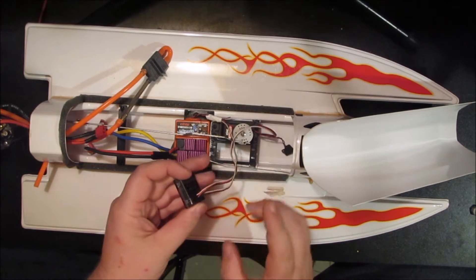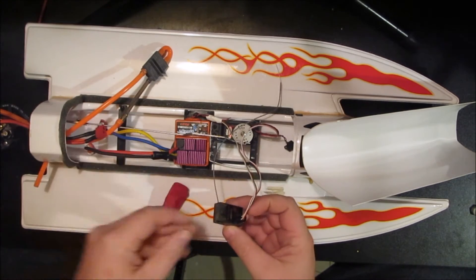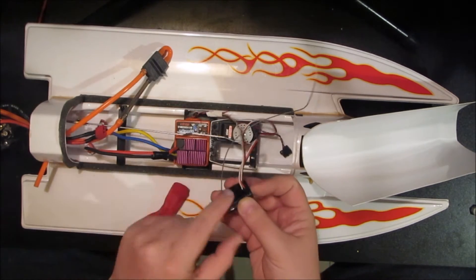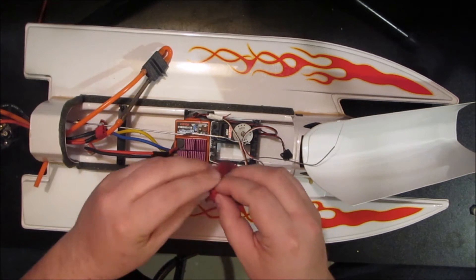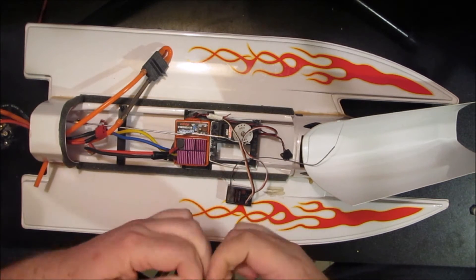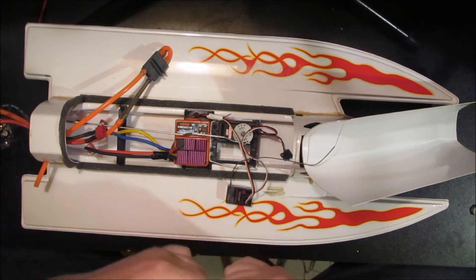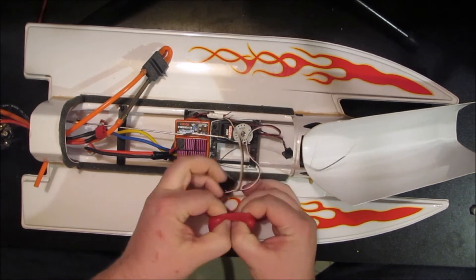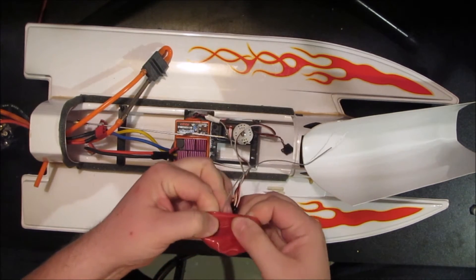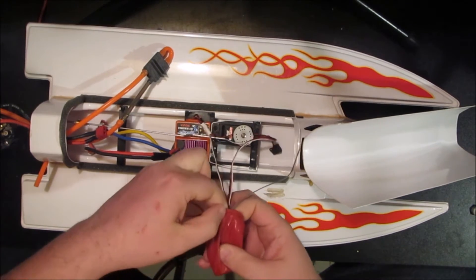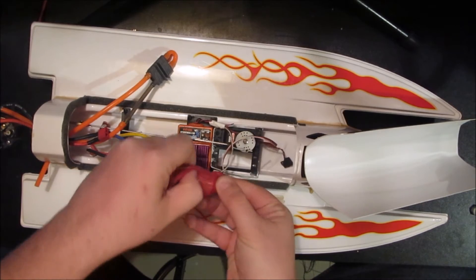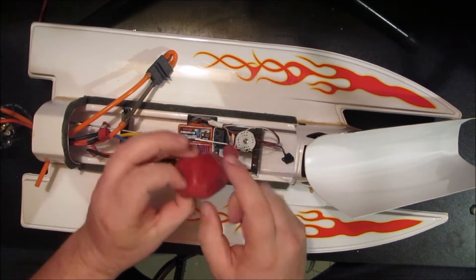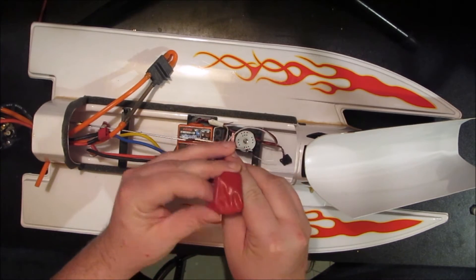The ESC and servos are already plugged in. Here's the antenna wire, and it's all going to just basically come up like this with this being inside the balloon. How we do that is we're just going to take the balloon, stretch it open, grab the receiver and carefully put it in the balloon.